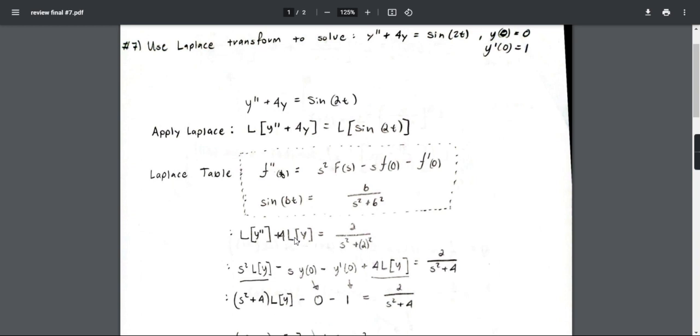For sine, as we can tell, b is going to be 2. So it's going to be 2 over s squared plus 4, as you can see over here.